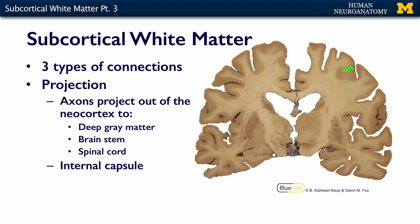These lower centers include going from the cortex to the thalamus, which is a center deep within the brain. Fibers can also go from the cortex down to the brain stem, or — especially if you remember our motor system — all the way from the cortex through the internal capsule down the spinal cord.